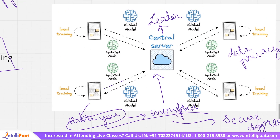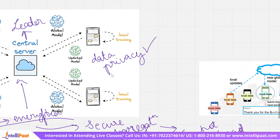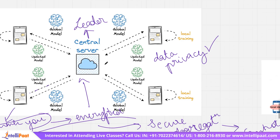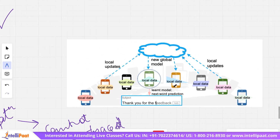All the risks of data privacy concerns have been solved through federated learning. The central server combines all the updates from millions of devices to improve the global model, using algorithms like federated averaging. The improved global model is sent back to all the devices, making the app smarter without ever sharing any private data. For example, a person who has only typed 'F' gets the suggestion 'feedback'. All local data is trained locally, updates are sent in encrypted format to the central server, which combines them and sends a new global model back to all users.